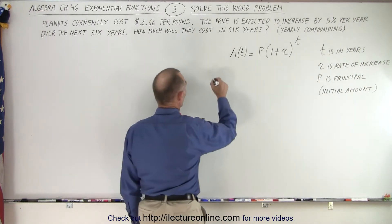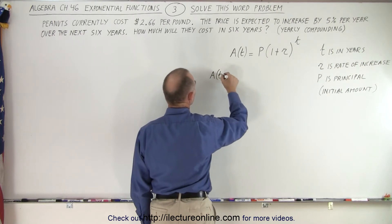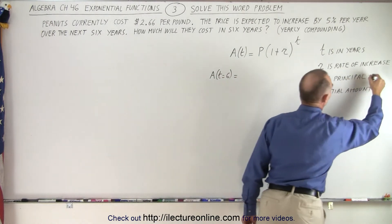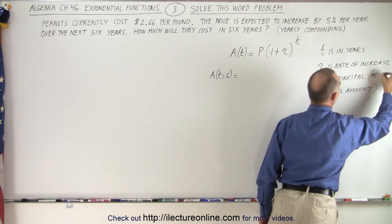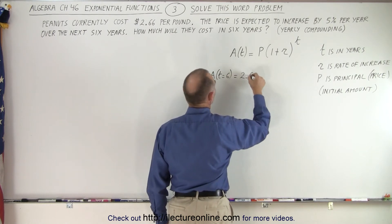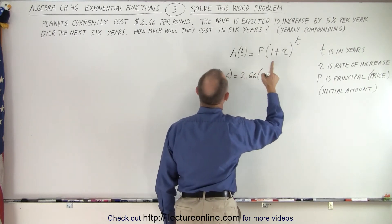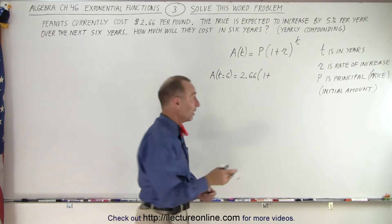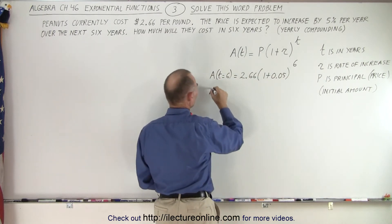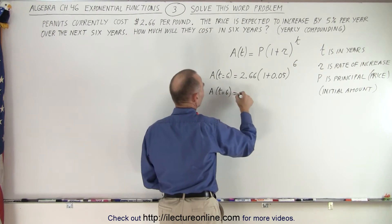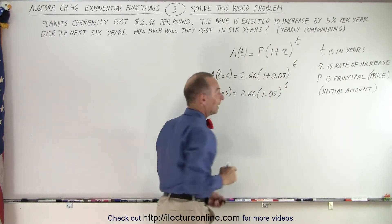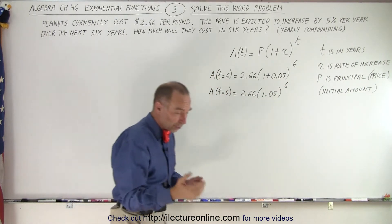Let's plug in some numbers. The amount A when t equals six years is equal to the initial price — the principal — which is $2.66, times 1 plus the rate. The rate is 5%, which converts to 0.05, raised to the sixth power. So A equals 2.66 times 1.05 raised to the sixth power. That's where the exponential function comes in.